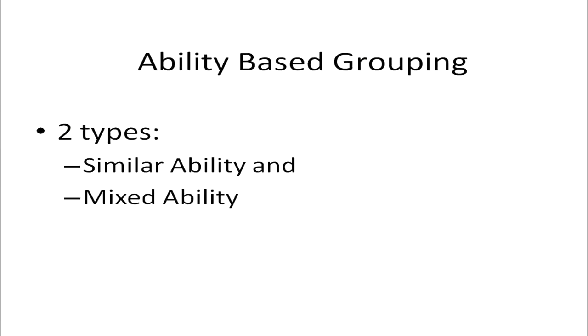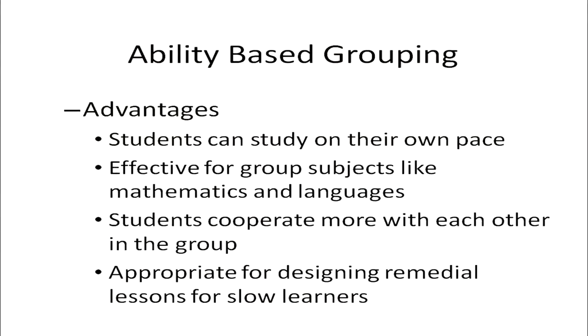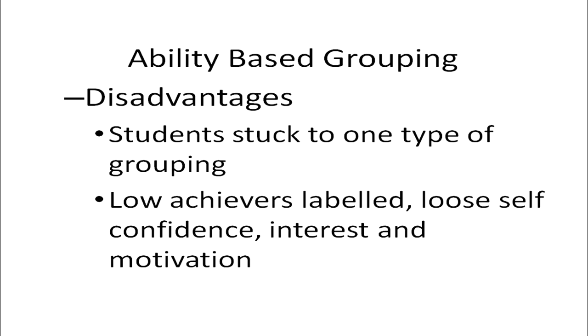Ability-based groupings are of two types: similar ability and mixed ability. In similar ability groups, the group is homogeneous — high ability, average ability, or low ability students together. The teacher prepares separate lesson plans for each group. Advantages include students learning at their own pace, effectiveness for mathematics and languages, and suitability for remedial lessons. However, students may be labeled and lose confidence if stuck in one group too long.